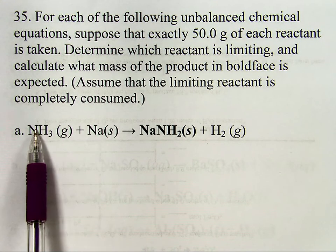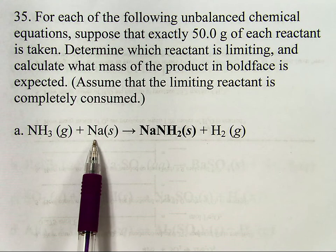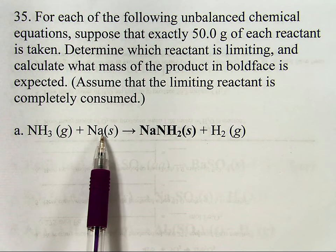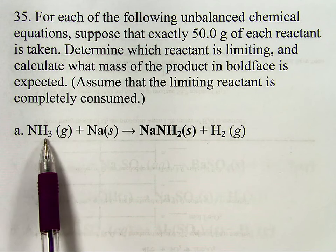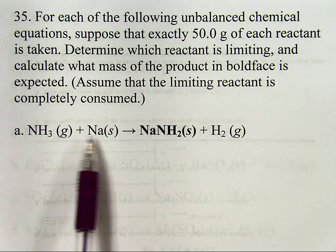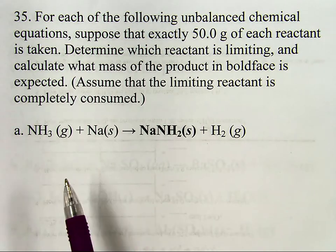If it tells you a certain amount of this reactant and a certain amount of this reactant, you need to be able to figure out how much product is going to be made based on whichever reactant is the limiting reactant, whichever one runs out first. Now, the thing about this is there is nothing here to tell you which reactant is the limiting reactant.